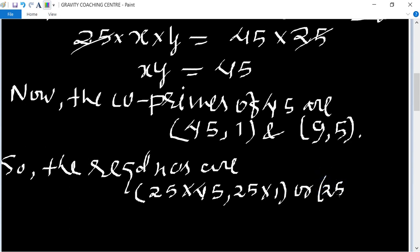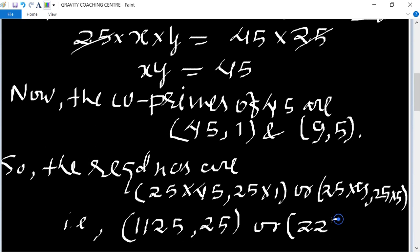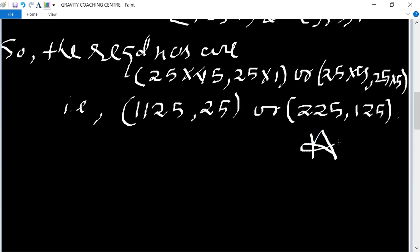So that is 25 times 45 equals 1125, comma 25, or 25 times 9 is 225, comma 125, which is the required answer.